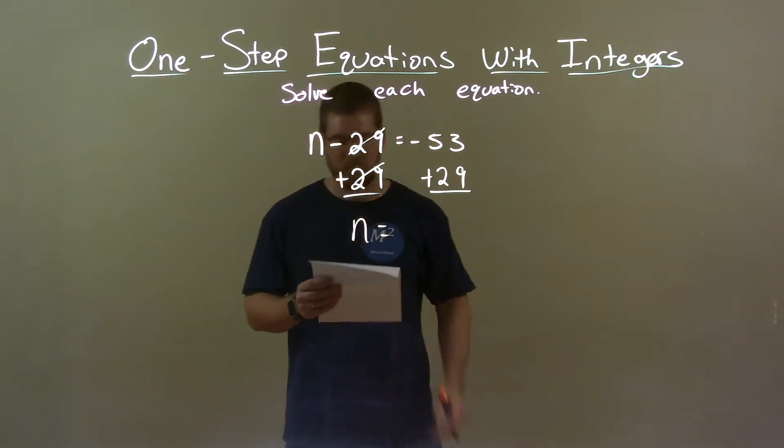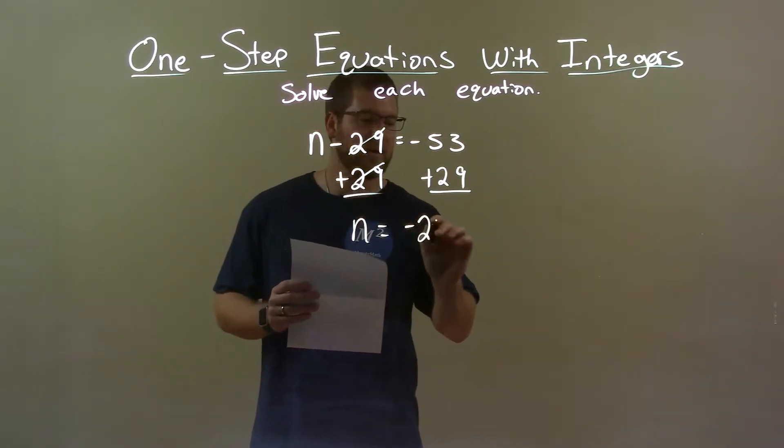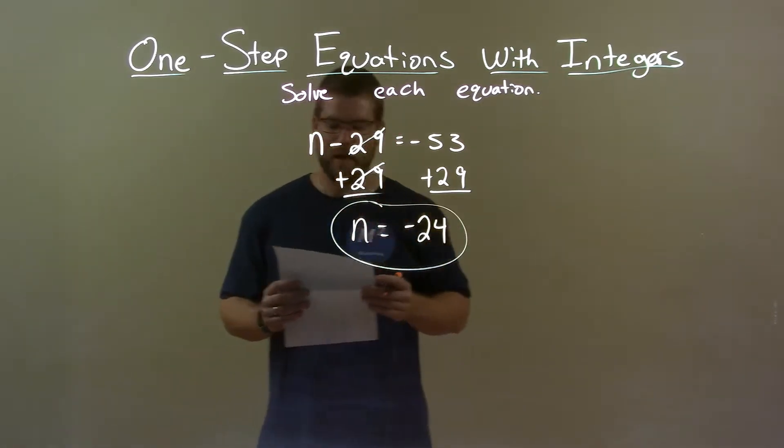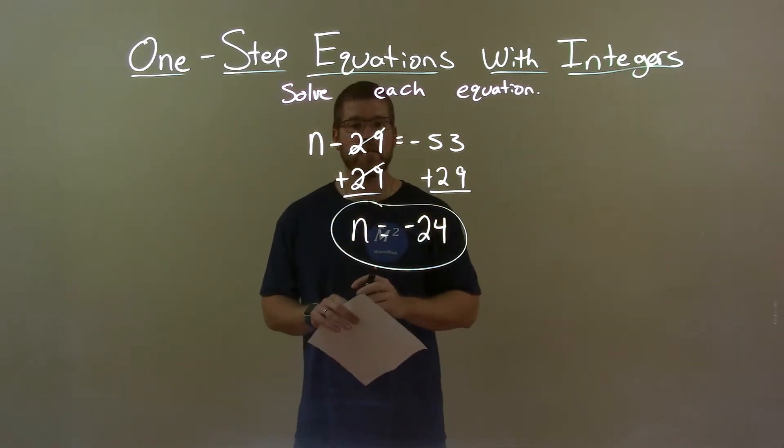Now, negative 53 plus 29 is a negative 24. And so my final answer here is just n equals a negative 24.